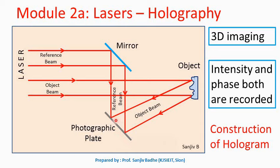The hologram is formed by the superposition of coherent light beams — one coming from the mirror and the other coming from the object. This interference pattern on the hologram consists of a complex pattern of alternately placed dark and bright regions, called fringes. This hologram is also called a Gabor zone plate, in honor of Denis Gabor who invented this technique.